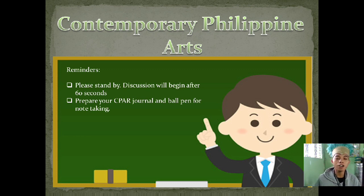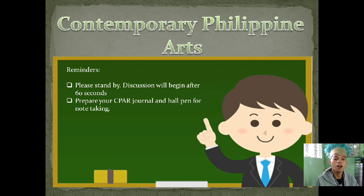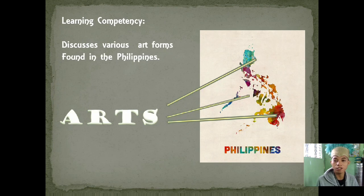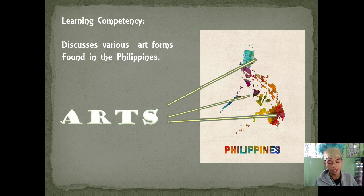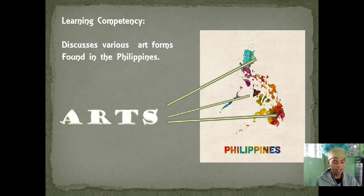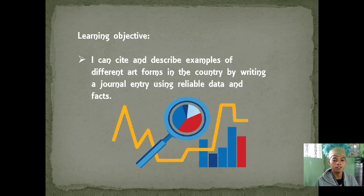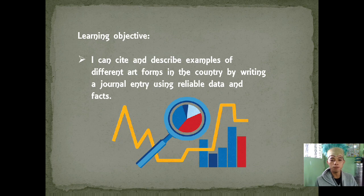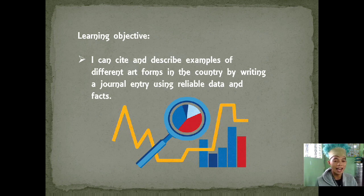Today let's have another lesson to discuss. Our learning competency is to discuss various art forms found in the Philippines. Our learning objective is that at the end of the session, you as a student will be able to cite and describe examples of different art forms in the Philippines by writing a journal entry using reliable data and facts.